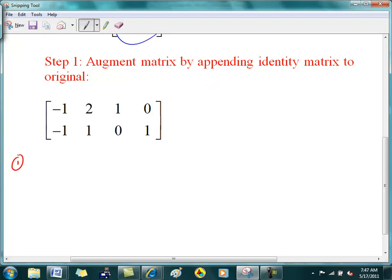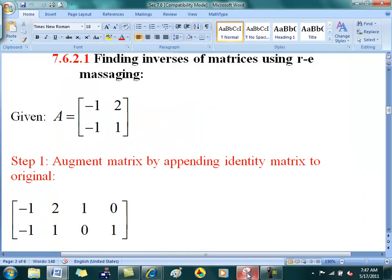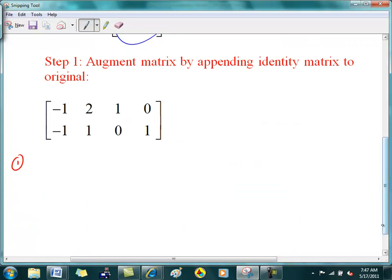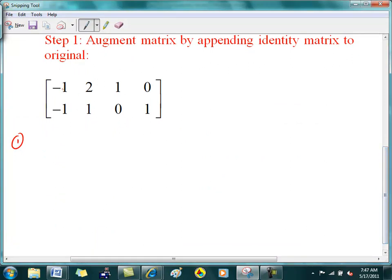So step one. I'm going to make this, so take minus one times R1 into R1. Just to make that a one, right off the bat. So that's going to be one, minus two, minus one, zero, minus one, one, zero, one.